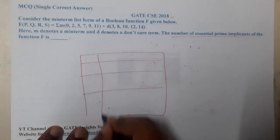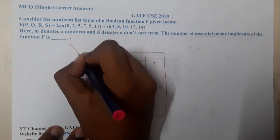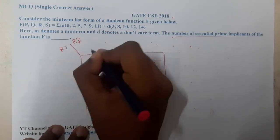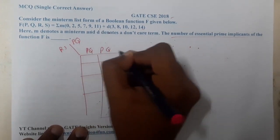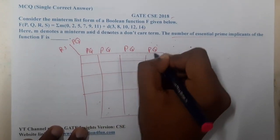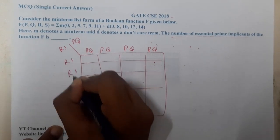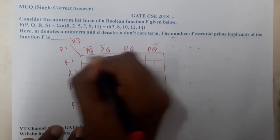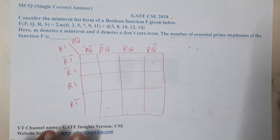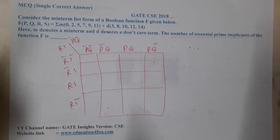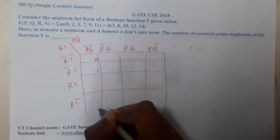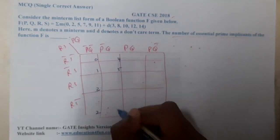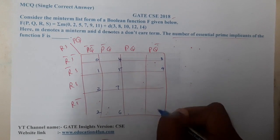The four variables are P, Q, R, and S. The K-map axes are PQ and RS, with values 00, 01, 11, 10 along both axes. Let me write down the cell numbers: 0, 1, 2, 3, 4, 5, 6, 7, 8, 9, 10.